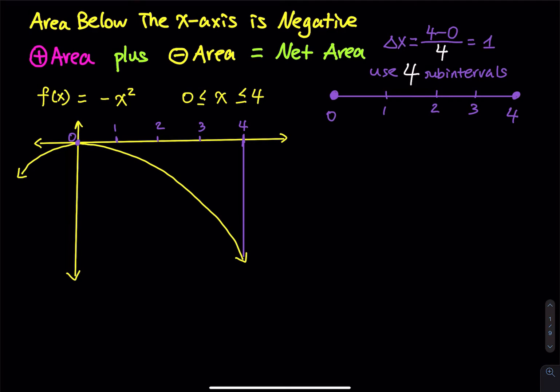Let me use this example to show you why that is negative. In this problem I have a parabola, but this parabola is upside down — it is negative x squared. x squared is a parabola that is concave up, facing up. If you put a negative in front of x squared, every time you square a value the y-value is always negative, so the entire parabola is below the x-axis.